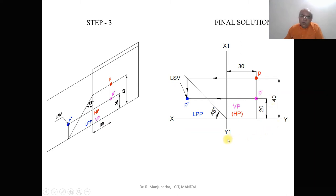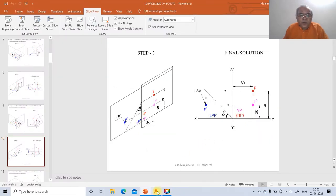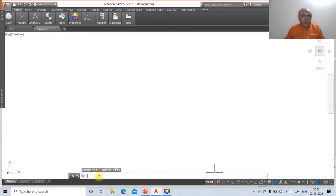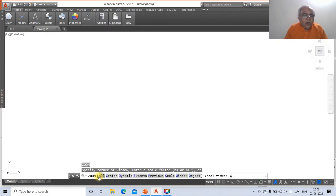Now we will explain how to do this problem in AutoCAD software. We go to the AutoCAD screen. First, remove the grids by switching them off. Then use the limits command — specify lower-left corner as 0,0 and upper-right corner as 297,210, then zoom all to set the A4-size limits and regenerate the drawing.